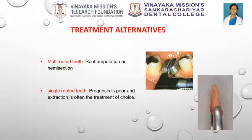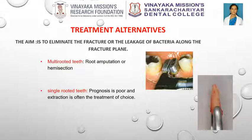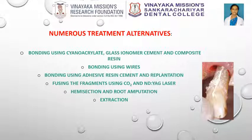Treatment alternatives for vertically fractured teeth are difficult and dependent on the tooth type as well as on the extent, duration, and location of the fracture. The main aim is to eliminate the fracture or the leakage of bacteria along the fracture plane. Multi-rooted teeth can often be successfully treated by resecting the root, either by root amputation or hemisection. In general, prognosis for single-rooted teeth is poor and extraction is often the treatment of choice. Innovative attempts to retain fractured teeth include bonding using cyanoacrylate, glass ionomer cements and composite resins; bonding using wires; bonding using adhesive resin cements and replantation; fusing the fragments using carbon dioxide and Nd:YAG laser; and hemisection and root amputation.